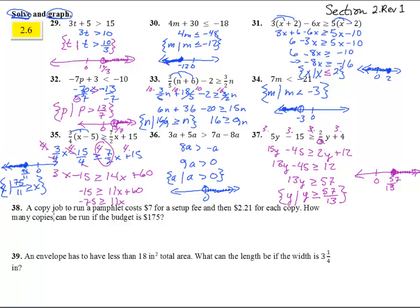Number 38. A company job to run a pamphlet costs $7 for a setup fee. And then an additional $2.21 for each copy. How many copies can be run if the budget is $175? So, $7 plus 2.21 times the number of copies has to be less than or equal to $175. And that's what we have with the budget there. We can solve this one. Subtract 7, we get 2.21 times the number of copies has to be less than $168. And then divide both sides by 2.21.